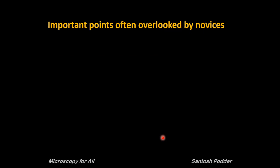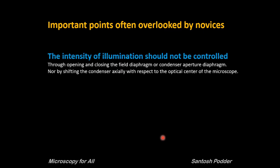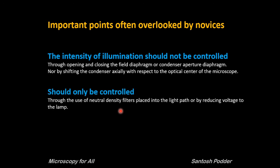Now, important points often overlooked by novices: the intensity of the illumination should not be controlled by opening and closing the field diaphragm or the condenser aperture diaphragm, and not by shifting the condenser axially with respect to the optical center of the microscope — I have seen many people have this misconception. Intensity should only be controlled either by using neutral density filters placed into the light path or by reducing the voltage to the lamp.